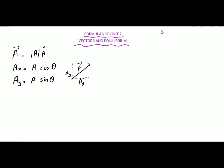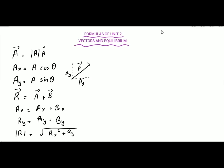Then we studied how to find the resultant of vectors from their rectangular components. For vector addition, the resultant vector R = A + B. We find RX = AX + BX and RY = AY + BY. The resultant magnitude equals the square root of RX² + RY². This is the rectangular component method of vector addition; we can also add vectors by the head-to-tail rule.